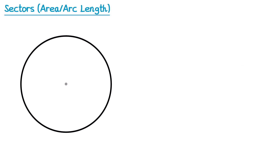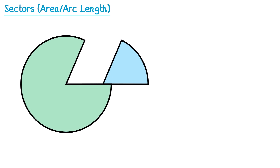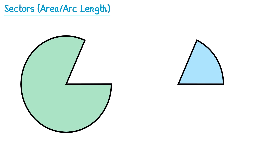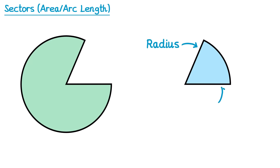If we take a circle and draw on a radius, and then a second radius, this region here is known as a sector. If we take a sector, you can see it's made up from three lines: this line here, which is a radius, this one here which is also a radius, and this curved one here, which we call an arc.